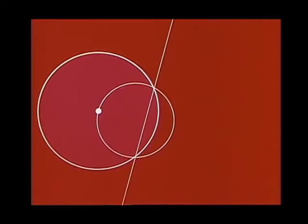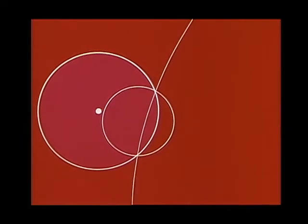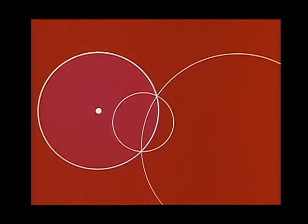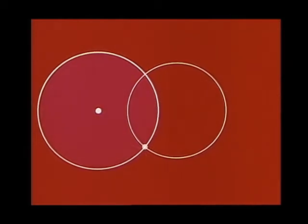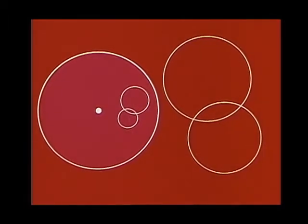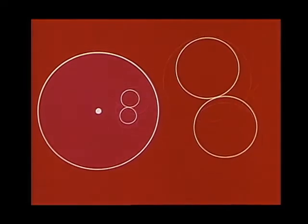We note again that the inverse of a circle through the center of inversion is a line. A circle orthogonal to the circle of inversion — that is, one which cuts the circle of inversion at right angles — is its own inverse. Inversion is a conformal mapping: the angle between two curves is congruent to the angle between their inverses. Tangent circles invert into tangent circles.